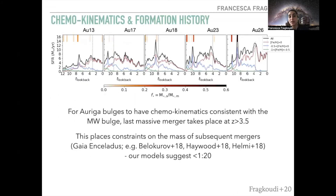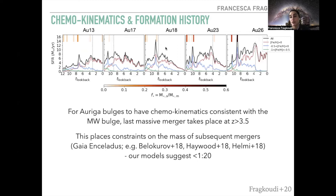For Auriga bulges to have chemokinematic properties consistent with the Milky Way bulge, the last massive major merger in the galaxy has to have taken place at redshift above 3.5 — more than 12 gigayears ago. This places constraints on the mass of subsequent mergers, such as the Gaia-Enceladus-Sausage merger, which our model suggests must have been around 1:20 or less. For example, in Auriga 18, a Gaia-Enceladus-Sausage-like merger happened at about 9 gigayears ago, but this was a 1:20 merger rather than, for example, a 1:10 merger.